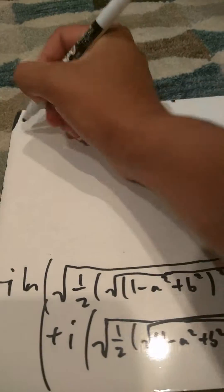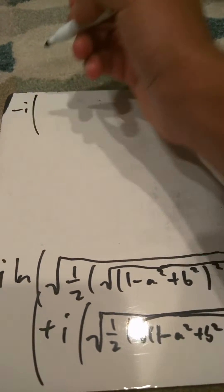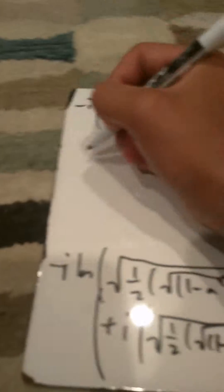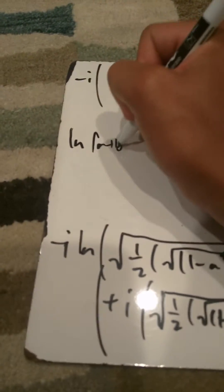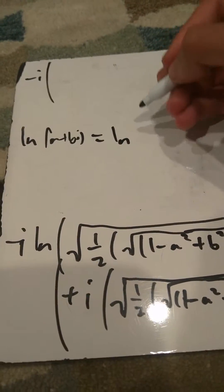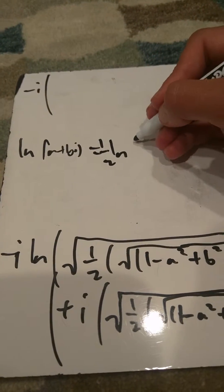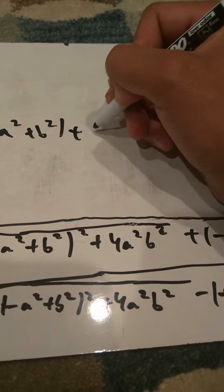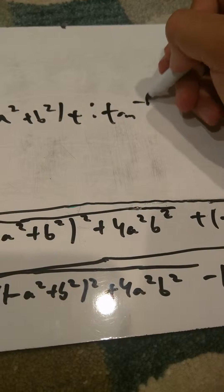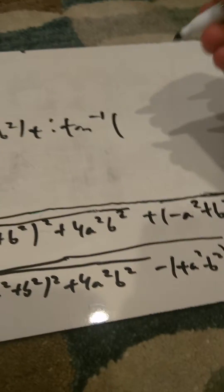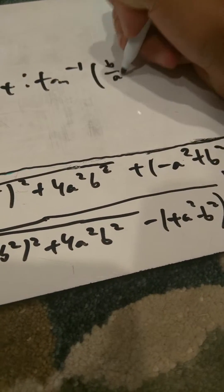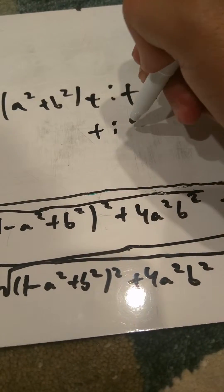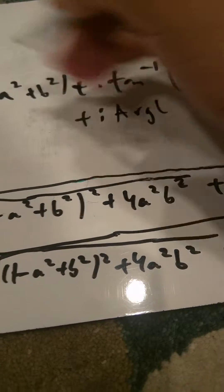Now we have the natural log of a complex number. So we have negative i times natural log of a complex number, which actually equals: ln of (a plus bi) equals one half times the ln of a squared plus b squared, plus i times the arctangent of b over a — that's just the argument — so plus i times arg(a plus bi).